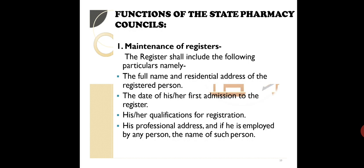The register shall include the following particulars: the full name and residential address of the registered person, the date of first admission to the register, their qualification for registration, their professional address, and if employed by any person, the name of such employer.